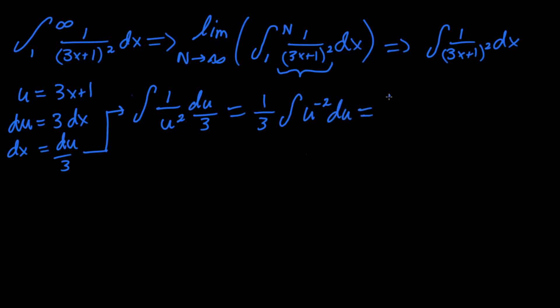So now we can set that equal to 1 third u to the negative 1 over negative 1, since we are simply adding 1 to the exponent, and then putting that as a denominator. We don't need plus c or anything, since we will address that part later. And then this will essentially equal negative 1 over 3u. We're just rearranging the terms.